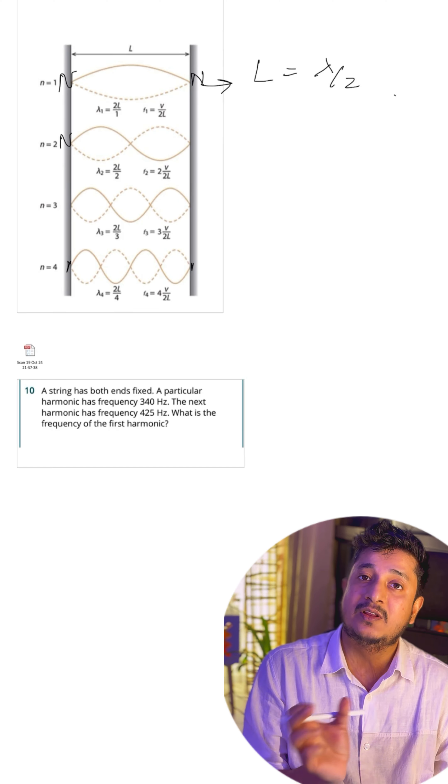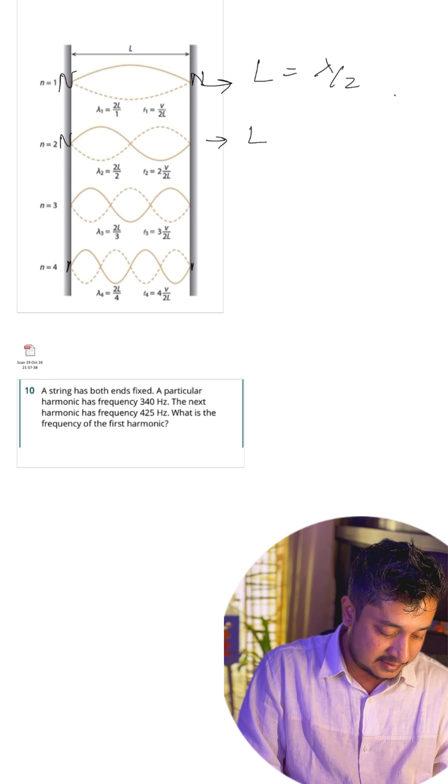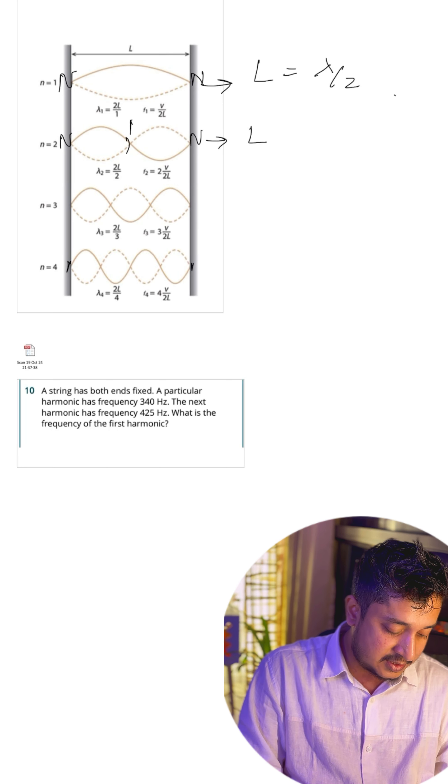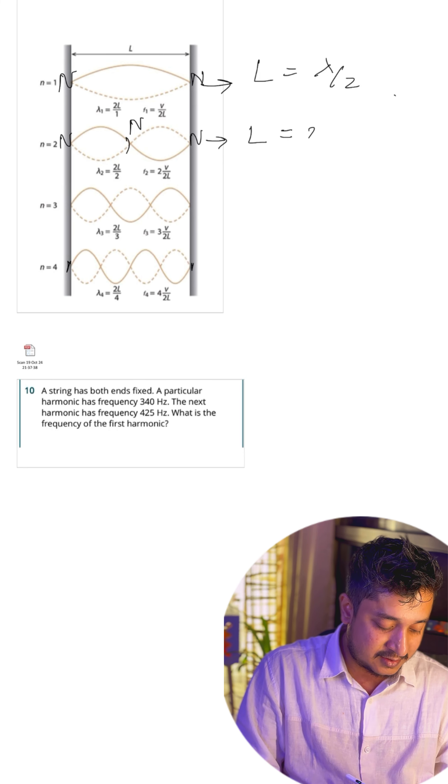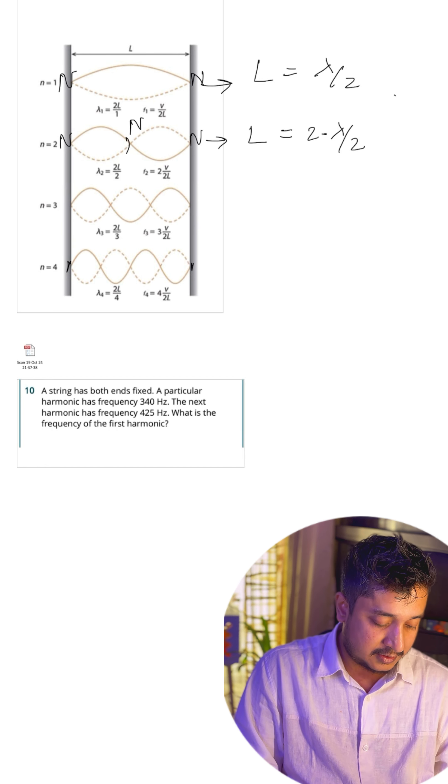This is the second method — the mathematical approach. For a string fixed at both ends, if we have the first harmonic, the length equals λ/2 since the two edges are nodes and the distance between two nodes is λ/2. For the second harmonic we have nodes at the edges and one more node in between, giving a length of 2·(λ/2).